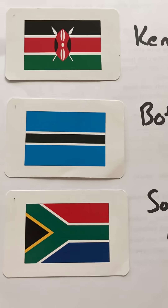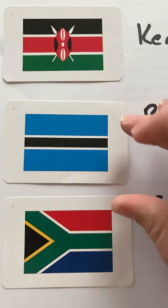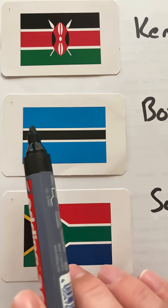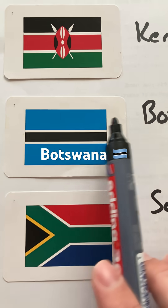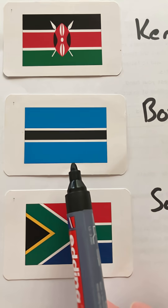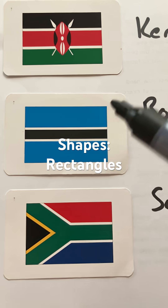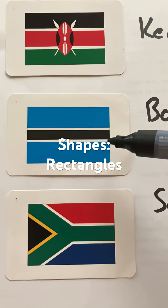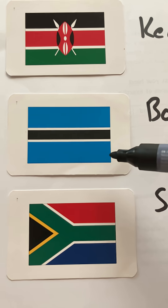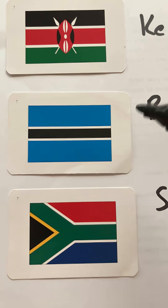What about Botswana? Again, the shapes are rectangles — one, two, three, four, five rectangles — the blue, white, and black, and then white and blue again.